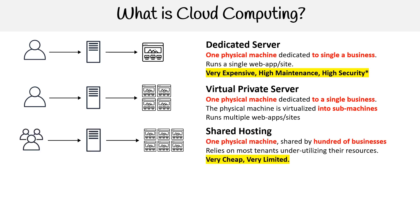Then we had shared hosting, which made it a lot easier for anybody building websites or WordPress sites. The idea here is that you had one physical machine shared by hundreds of businesses — not a single business sharing the cost, but multiple businesses. This relies on most tenants under-utilizing the resources. So if a hundred people are on a server and one person uses more than the others, everyone could potentially suffer. But at the very least, you're getting very cheap servers, though there are definitely some limitations.